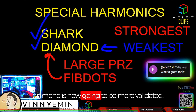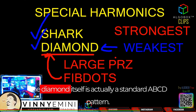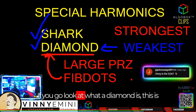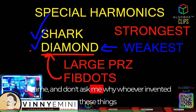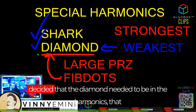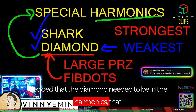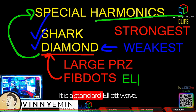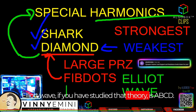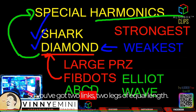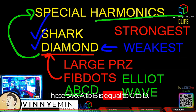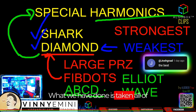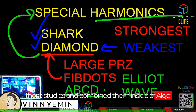The diamond itself is actually a standard ABCD pattern. If you go look at what a diamond is — and don't ask me why whoever invented these things decided the diamond needed to be in the harmonics — the diamond is actually an Elliott Wave. It is a standard Elliott Wave: A-B-C-D. You've got two legs of equal length — A to B equals C to D. You guys can go study Elliott Wave. What we have done is taken all of those studies and combined them inside of AlgoBox to be very, very powerful.